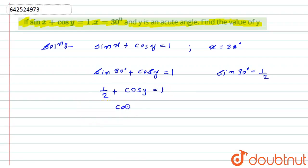Now I will take this 1 by 2 to that side. So the equation will become cos y is equal to 1 minus 1 by 2, which will be equal to 1 by 2.